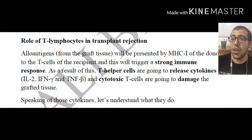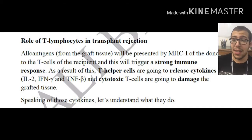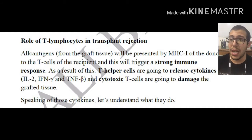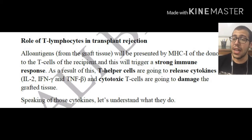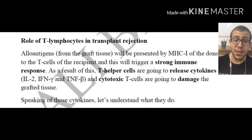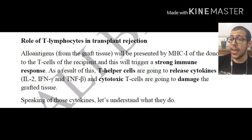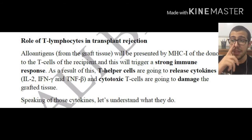As a result of this, T helper cells are going to be releasing cytokines like interleukin 2, interferon gamma, TNF beta, and TNF alpha — these are going to be discussed in the next slide. The cytotoxic T cells, which are the CD8+ cells, are going to be damaging the graft tissue.